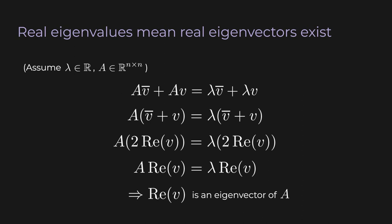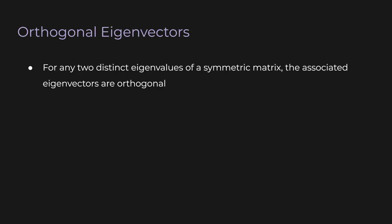Also notice that A doesn't need to be symmetric — we didn't even assume A is symmetric in this proof. Now if we combine these last two proofs together, we get the statement that real symmetric matrices have real eigenvalues, and we can find a real eigenvector associated with each of those eigenvalues.